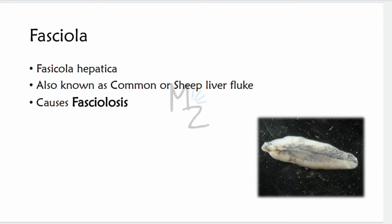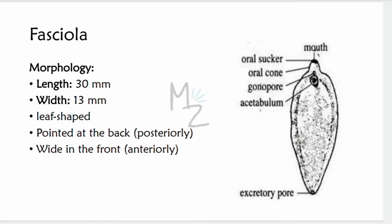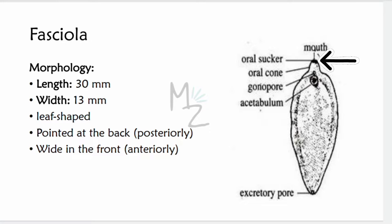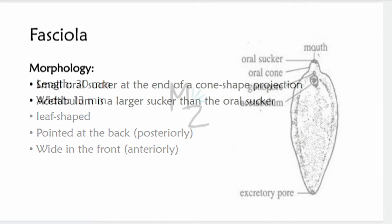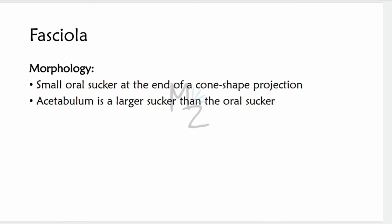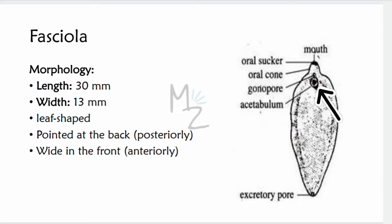The first trematode of minor importance is Fasciola hepatica, also known as the common or sheep liver fluke. It is responsible for causing fasciolosis. Morphology: it is 30 mm long and 13 mm wide, leaf-shaped, pointed at the posterior end and wide at the anterior end. It has a small oral sucker at the end of a cone-shaped projection. The acetabulum is a larger sucker than the oral sucker, and it helps the fluke attach to the host body.